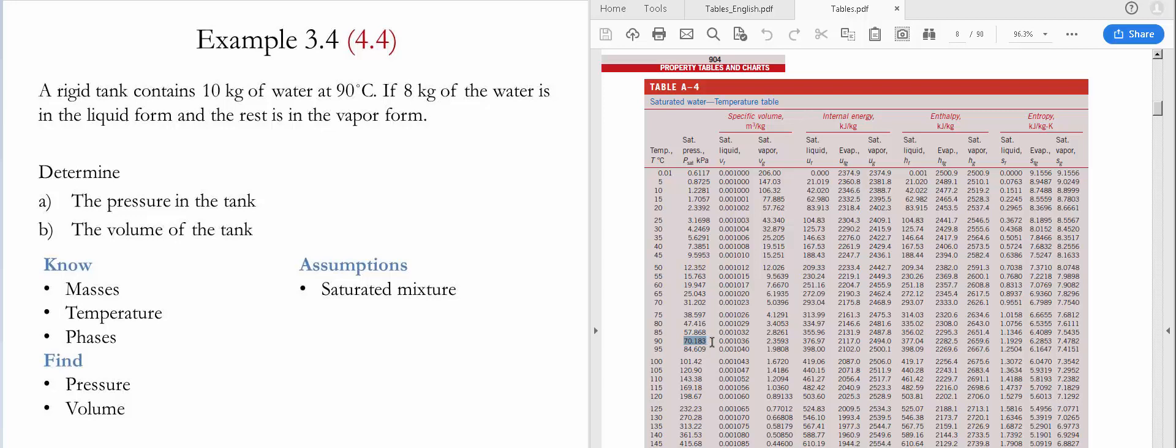Now in order to find the volume we need to find the two corners of the saturated line, which is going to be the saturated liquid and the saturated vapor. This is the value for the saturated liquid specific volume 0.001036, and this is the value for the saturated vapor which is equal to 2.3593, both in meter cubed per kilogram.